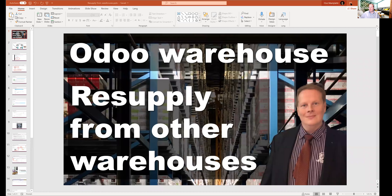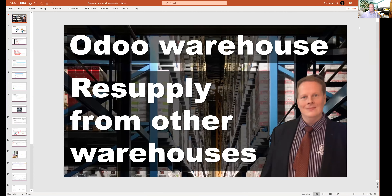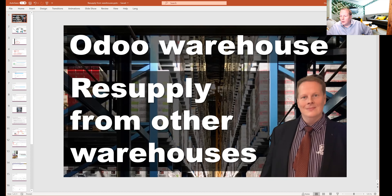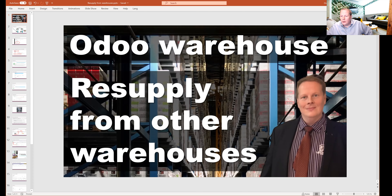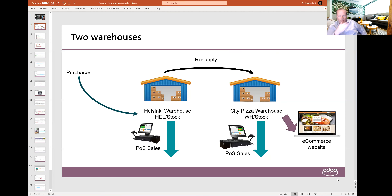We will first go through a little bit of theory, and then we will see how this is done in the real system. In our example case, we will be having two warehouses: Helsinki Warehouse and City Pizza Warehouse.